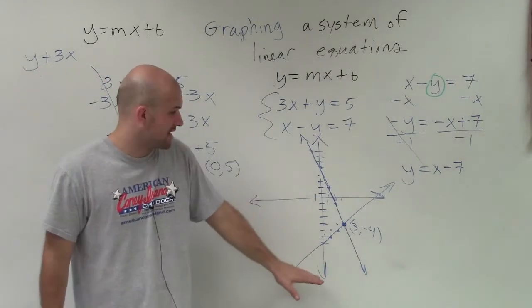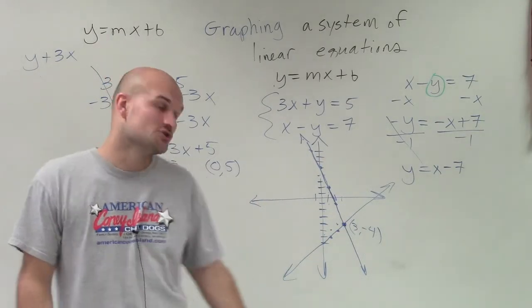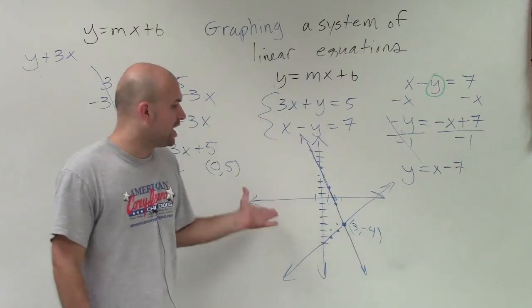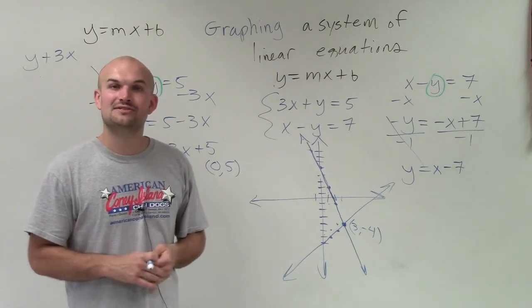So now once we have one solution here, we know that we're going to have a consistent solution in a linear system. And it also is going to be independent. So there you go, ladies and gentlemen. That's how you graph your linear system. Thanks.